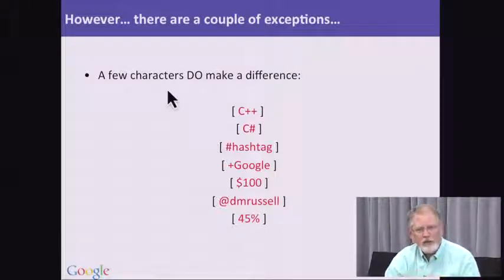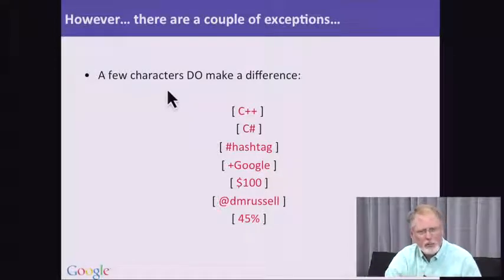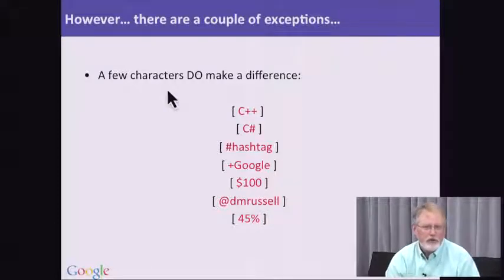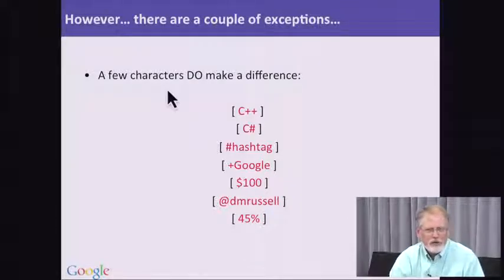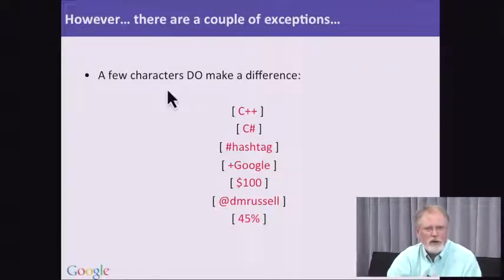You can also put a dollar sign in front of a number to search for a price, or an at sign in front of a person's name or handle to search for people on various social network streams. If you put the percent symbol after a number, you can search for values with that percentage attached. Note that it doesn't generalize — you can't put percent signs everywhere; it really only works when the percent follows the number.